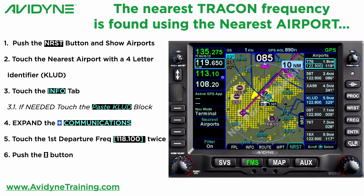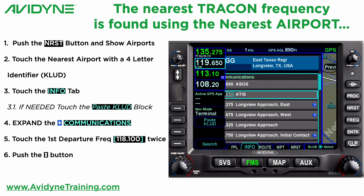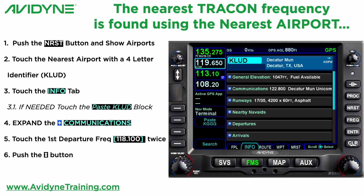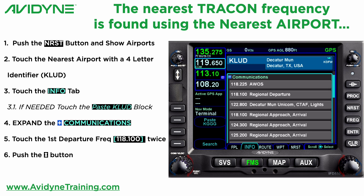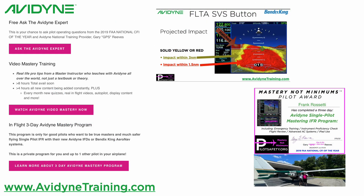Let me show you how easy it is to do. I'm going to push the nearest button, then touch K-L-U-D four-letter identifier, the Info tab. I'm going to paste K-L-U-D, expand communications, touch 118.1 twice, and then use the Flip-Flop button — and that's all you have to do.